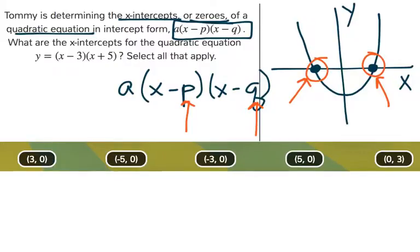So it says, what are the x-intercepts for the quadratic equation? And let's go ahead and write this out. So y equals x minus 3 times x plus 5.